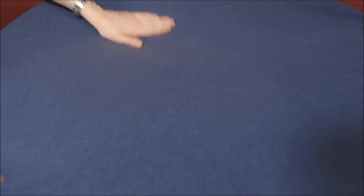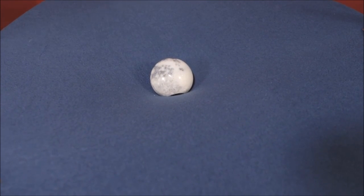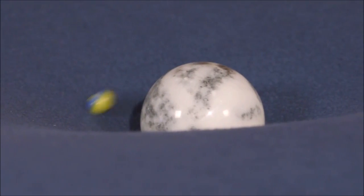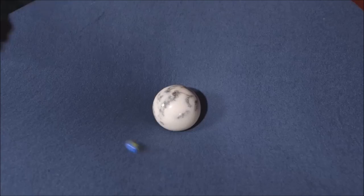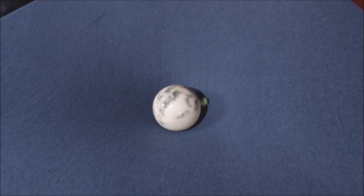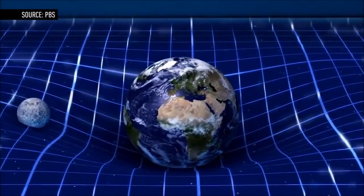A smaller object on the blanket's surface doesn't change the shape all that much. It will just roll straight across. But if you place a bigger object with more mass on the blanket's surface, it warps the overall shape much more significantly and affects other passing objects. This is basically how gravity works in our universe.